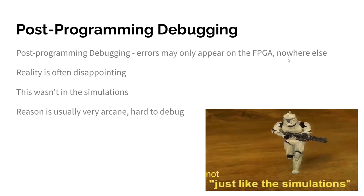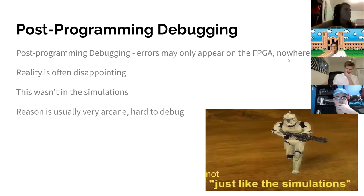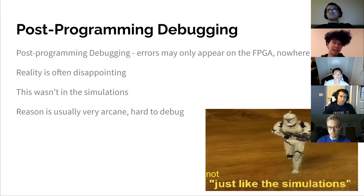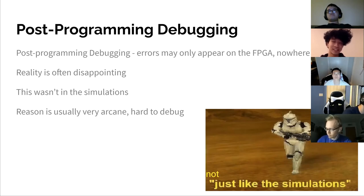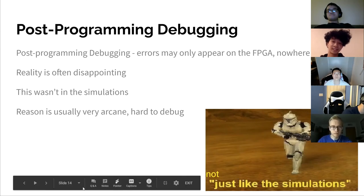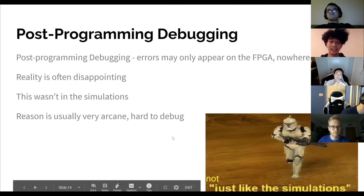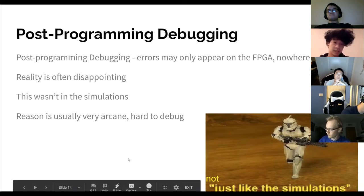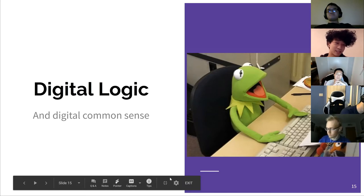And then finally, there's post-programming debugging. When your timing is good and you've placed and routed everything and get it onto the FPGA, you can still have problems. If you get this error, you're kind of in trouble because the reason is usually arcane and strange. Generally you're going to need to break out one of the signals to the actual FPGA pins and figure out what's happening in reality, because the problem won't show up in the simulations.